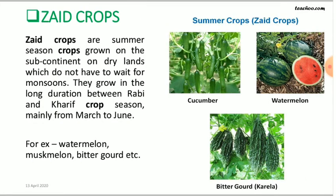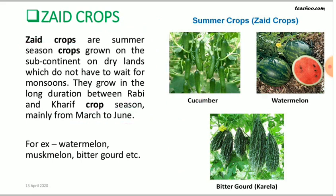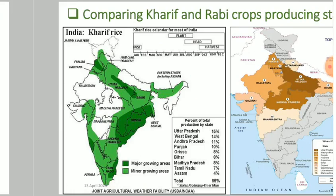Finally, we have the summer crop, termed as Zaid crop. This is grown between the Rabi and Kharif crop seasons — that is, in the months of March to June. Almost all vegetables grown in this season fall under horticulture. Examples of Zaid crops include cucumber, watermelon, and bitter gourd. Don't forget this, students.